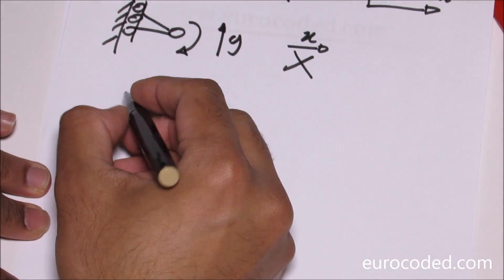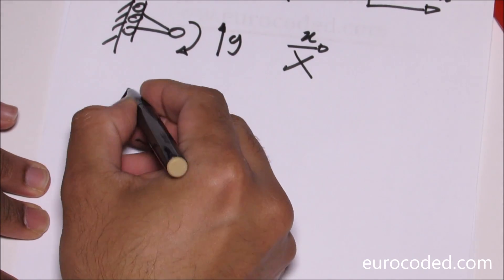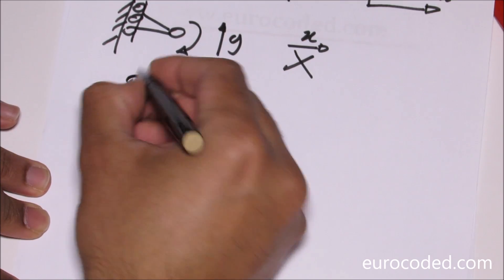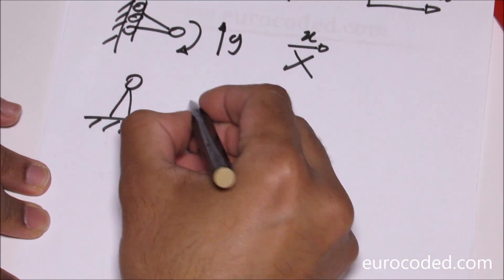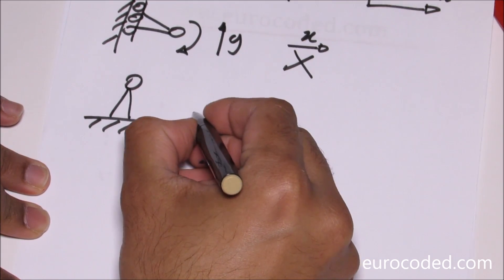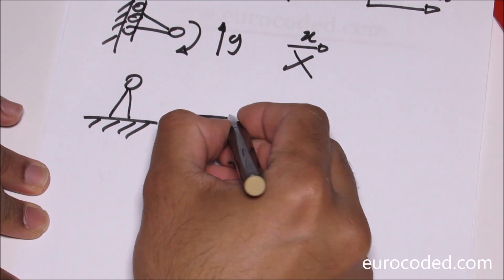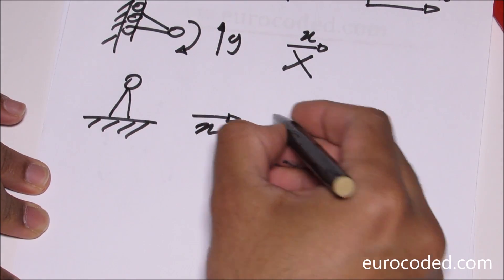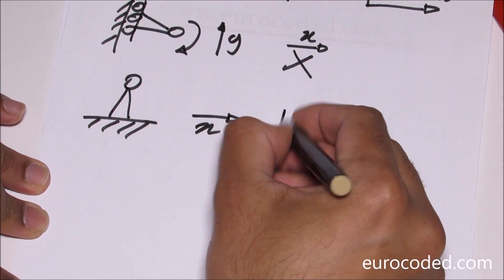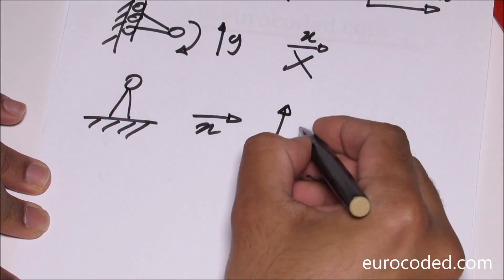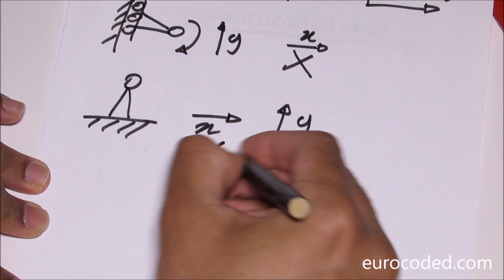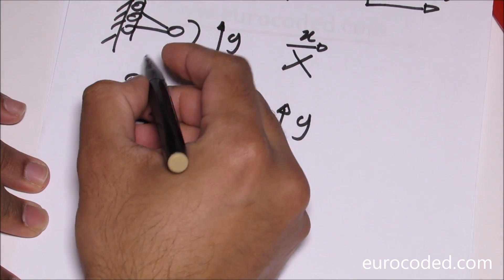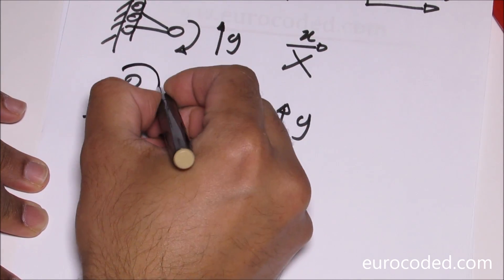The third type is a pin support. It does not allow movements in the x direction or in the y direction. However, it does allow rotation.